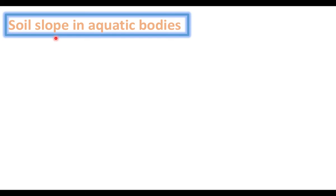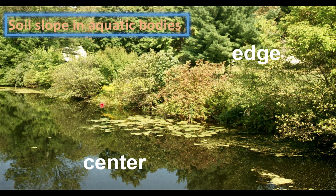In aquatic bodies like ponds and lakes, the soil slope changes the water depth. The center of the water body is deeper, but the edges are shallow. Rooted plants grow at the shallow edges, and the center has no rooted plants. The soil slope in aquatic bodies changes the water depth, which determines the type of vegetation at different depths.